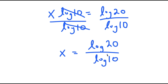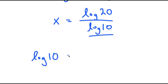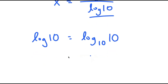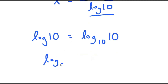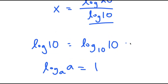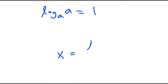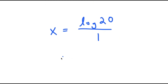Now we want to find the exact decimal value. Log 10 — when I say the log of a number, this is the same thing as log base 10 of that number. And if I have something in the form log base a of a, this is just equal to 1, meaning log of 10 is equal to 1. So I get x is equal to log 20 over 1, which is just log 20.